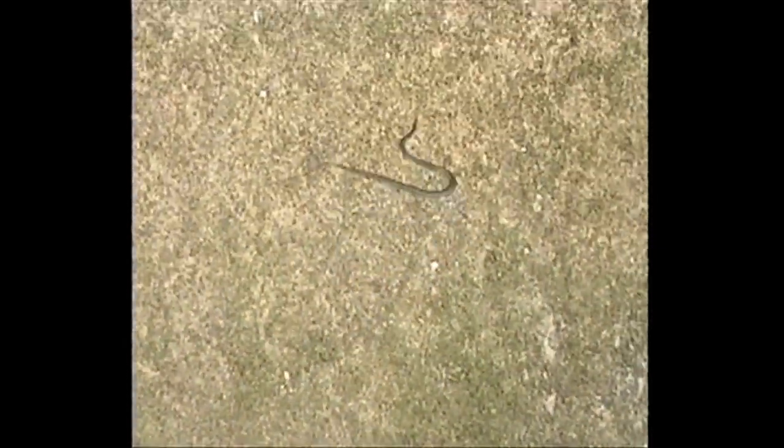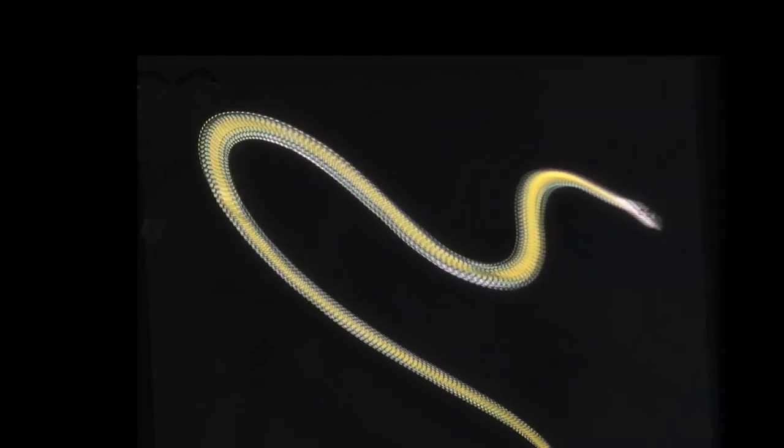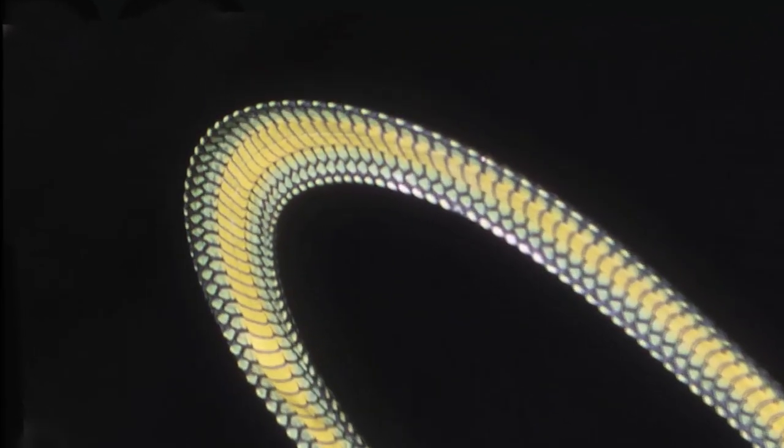When flying snakes glide, they undulate in the air, but they also flatten the body from head to vent. The tail doesn't flatten.